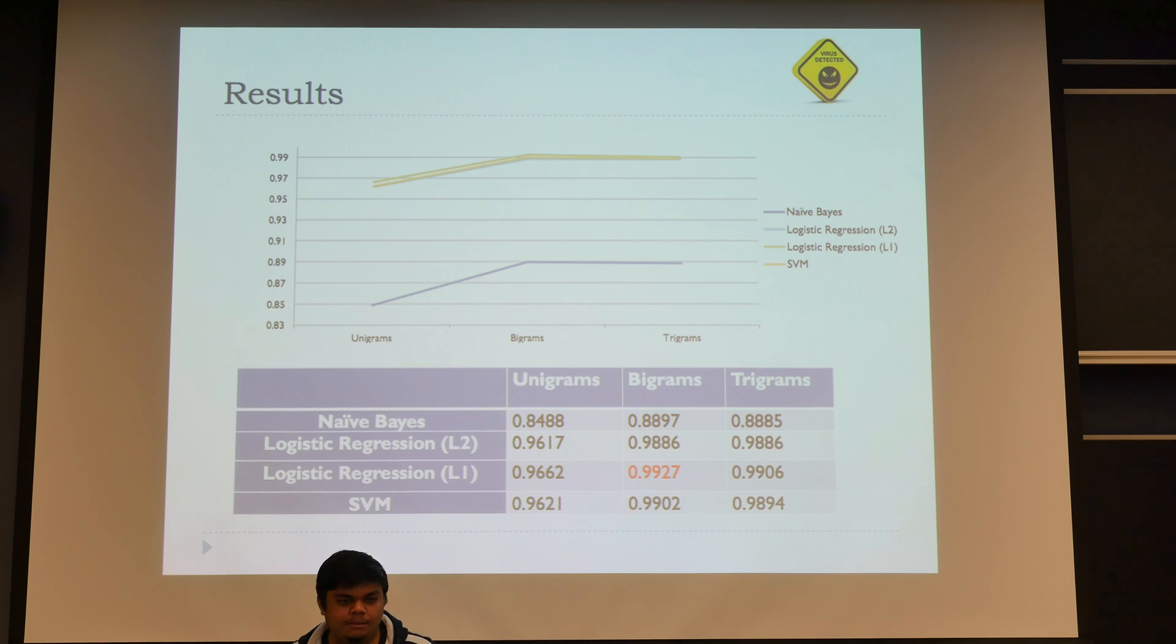When you're using opcodes, you're neglecting everything that follows them. That basically helps you avoid letting those instructions impact your model. As you can see up here, the best accuracy that we got was about 99.27%, which was with logistic regression using L1 regularization for bigrams. Thank you.